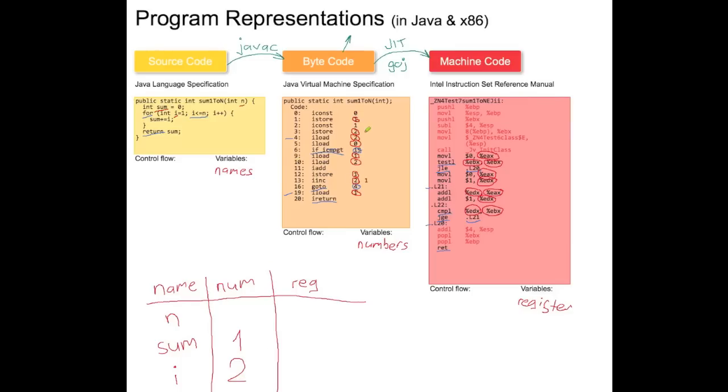And then we have one local variable left. We see we access it here, iLoad zero. We never store anything in that local variable. And if you look over here in the source code, which variable do you see that we only read or load from? n, because it's passed in as an argument to this method and we don't actually change it. We just use it here when we compare. Okay, so n is number zero.